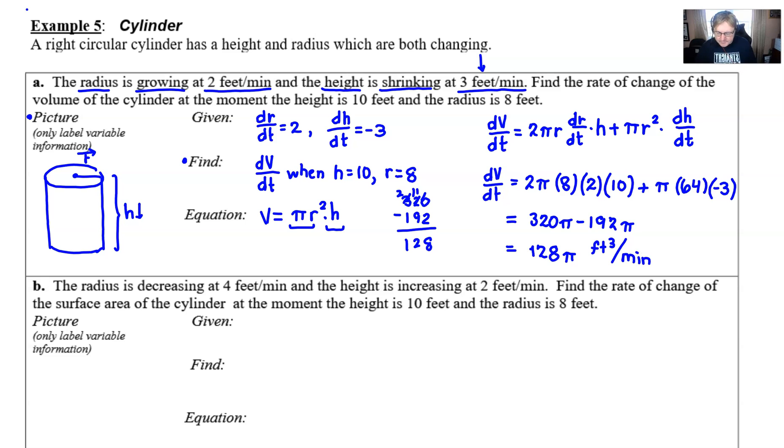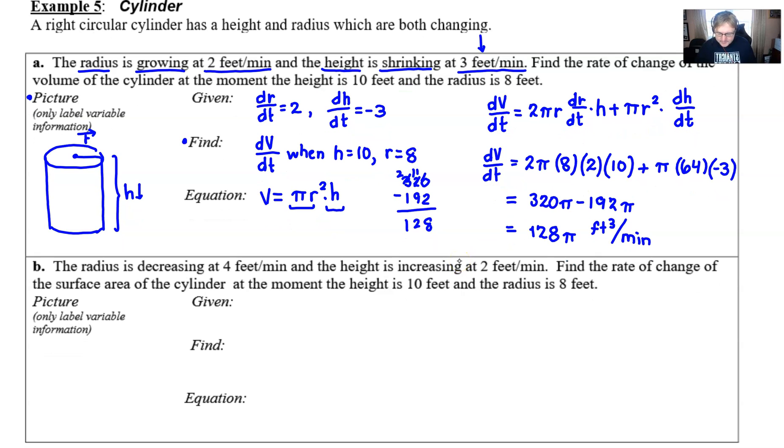Let's go ahead and take a look at part B and see how it differs. Now the radius is decreasing at 4 feet per minute and the height is increasing at 2 feet per minute. Find the rate of change of the surface area of the cylinder at the moment the height is 10 and the radius is 8.